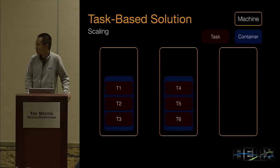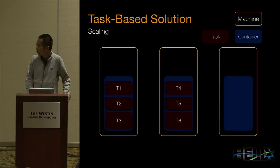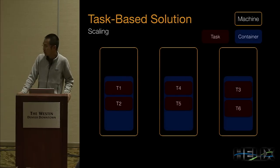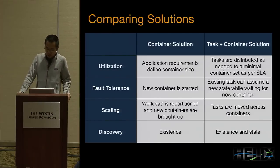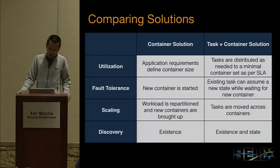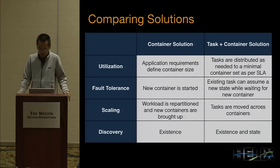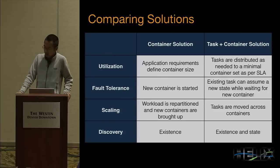For discovery, since we have state associated with tasks, we can discover not just the existence of a container but also the state of each task — learning where everything is running and what state each task is in. For scaling, we don't need to repartition the workload; we just move tasks across containers. In summary for the task-based solution: tasks are distributed to a minimum set of containers for more flexible and dynamic resource use; existing tasks can assume new states during failures while waiting for new containers; and discovery works at the state level.